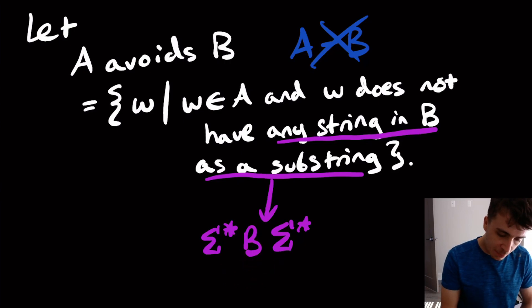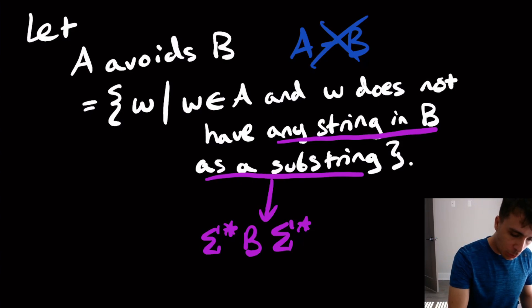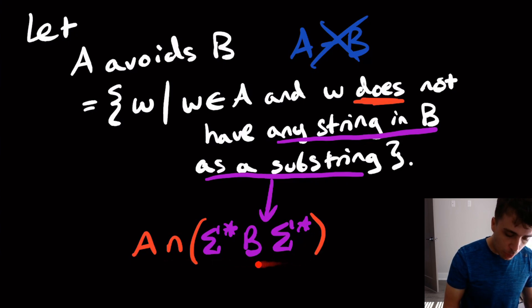Well, what does it mean that A does not have any string as a substring? Well, it's the same thing as everything in A take away all of the strings in A that have something as a substring. So what does it mean to have, that it does have something as a substring? Well, that's just saying A intersection this thing. So this part right here is everything in A that does have something in B as a substring, because we're doing intersection here.